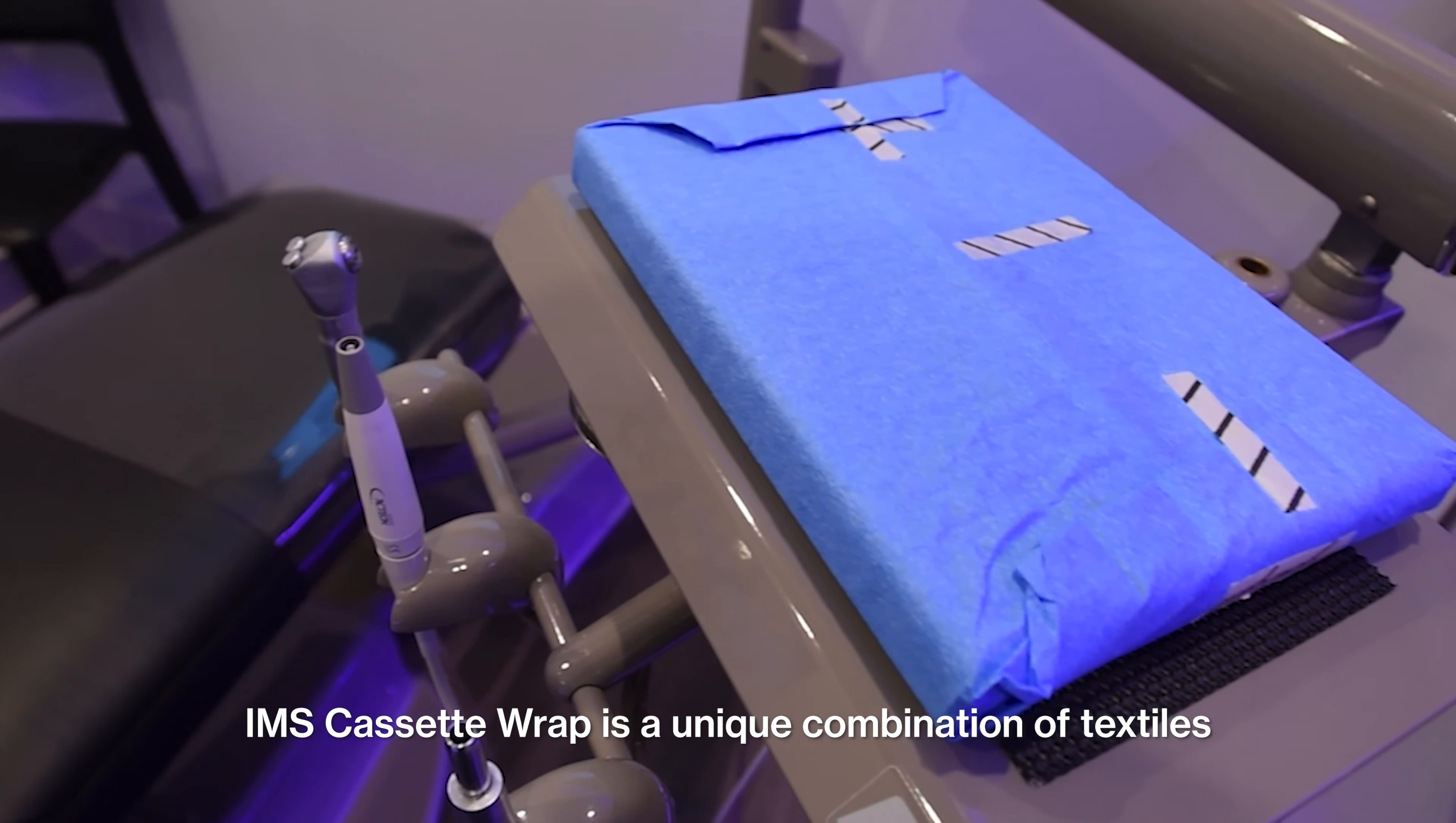For quick and easy wrapping, you can use the IMS bonded double wrap that is made of two sheets of ultrasonically bonded wraps. It is made of SMS polypropylene that has strength and durability against tears and punctures, protecting the contents during transportation and storage.